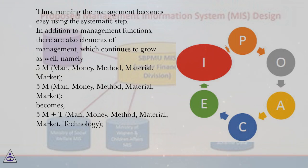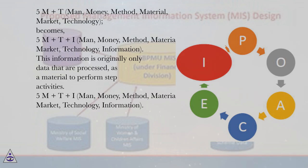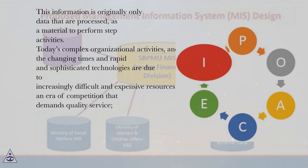Running the management becomes easy using the systematic step. In addition to management functions, there are also elements of management which continue to grow: from 5M (Man, Money, Method, Material, Market), to 5M+T (adding Technology), to 5M+T+I (adding Information). This information is originally only data that are processed as a material to perform step activities.